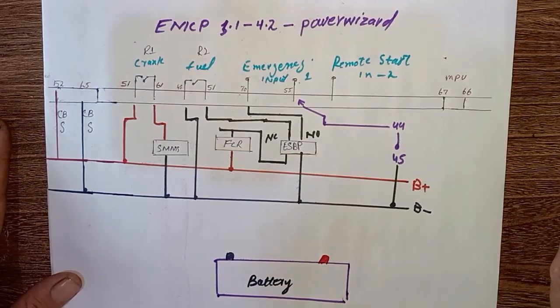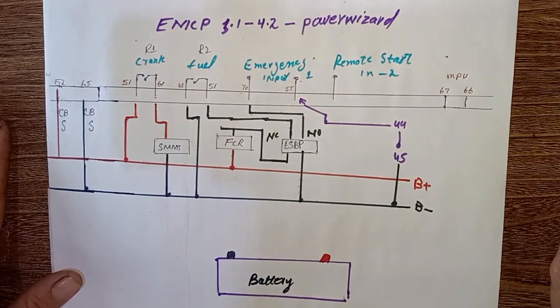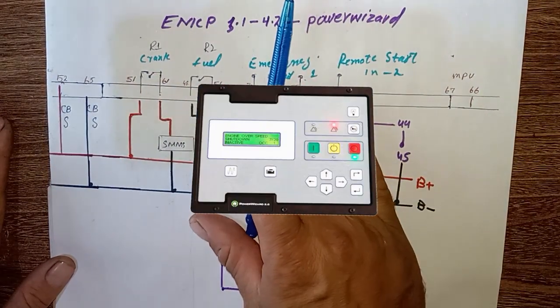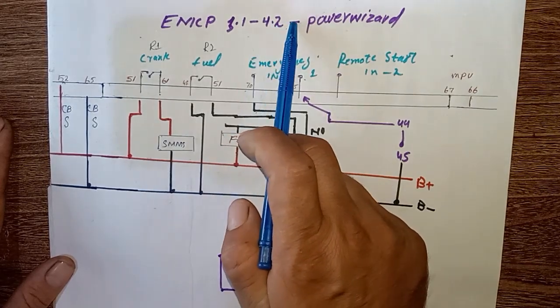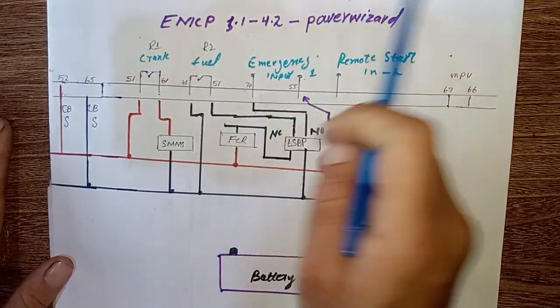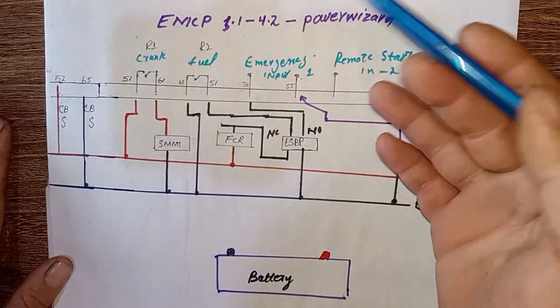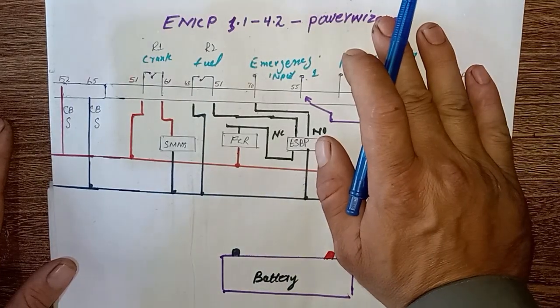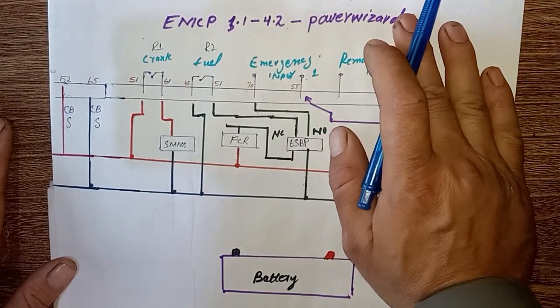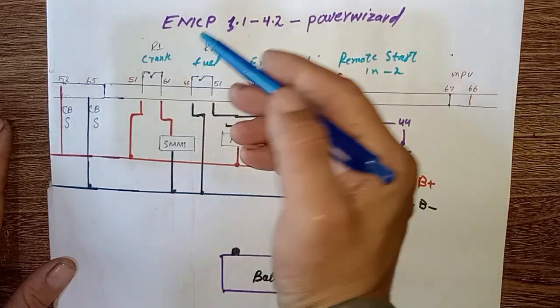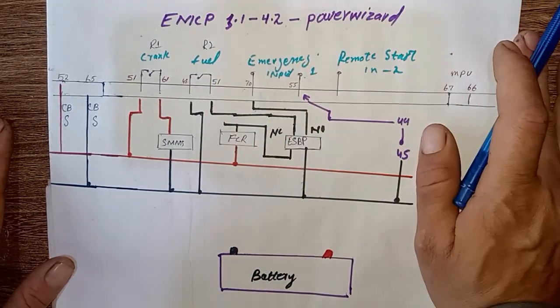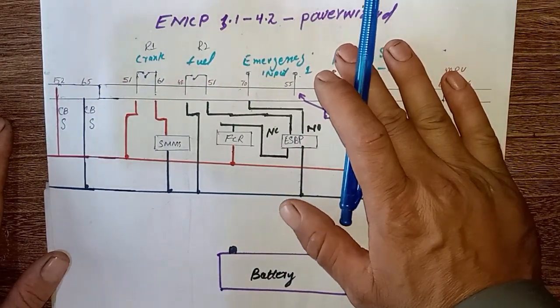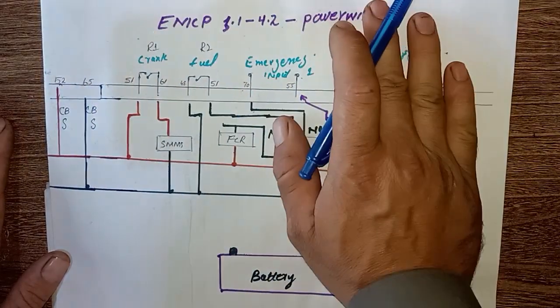Hi and assalamualaikum, welcome back to Technology Information Channel. Today we're going to explain some basic wiring of EMCP from 3.1 to 4.2 and PowerWizard from 1.1 to 1.4. All EMCP versions from 3.1 to 4.2 and PowerWizard from 1.1 to 1.4 have the same wiring connections.